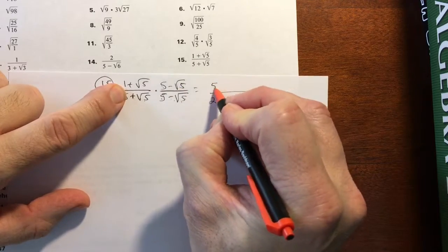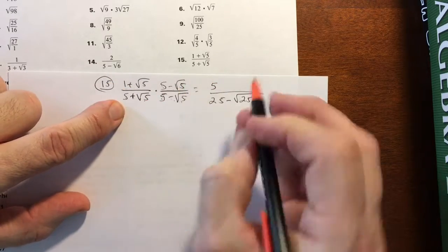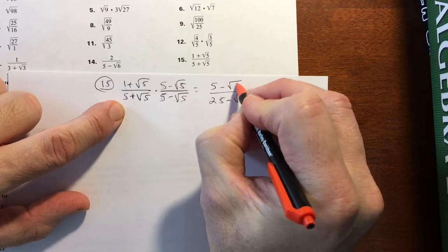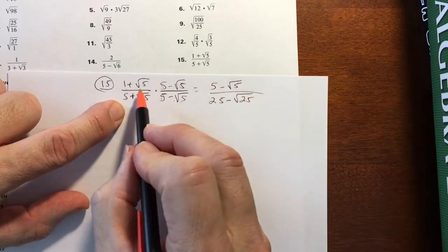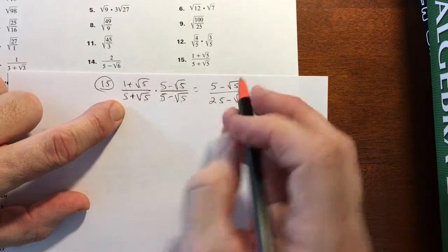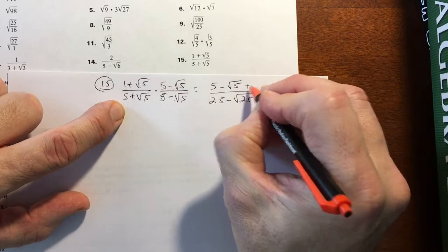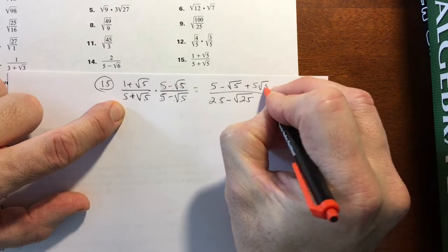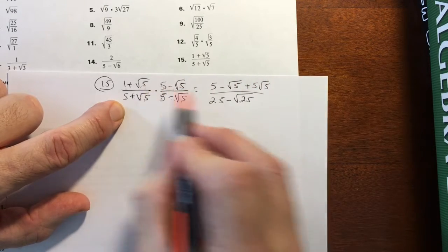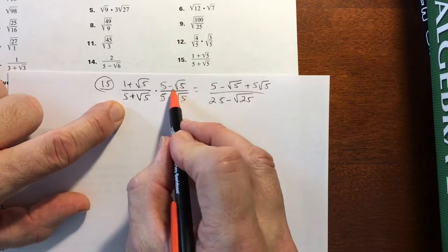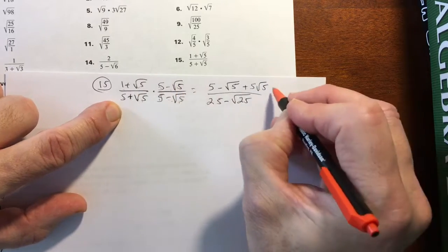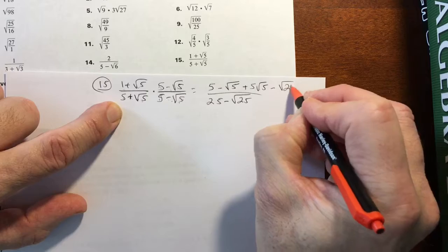It's still going to be up here in the numerator. So using FOIL, 1 times 5 is 5. 1 times negative square root of 5 is negative square root of 5. Now the insides, square root of 5 times 5 is going to be, it's positive, so it's plus 5 square roots of 5. And then negative square root of 25.